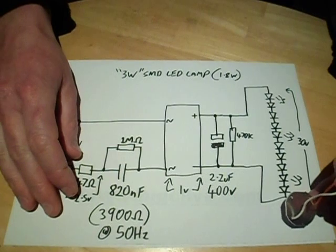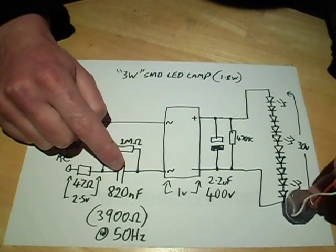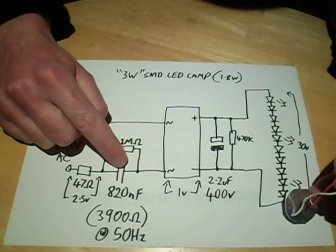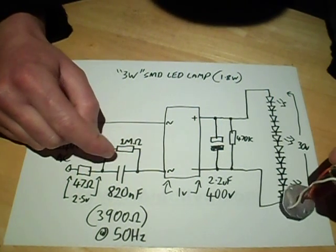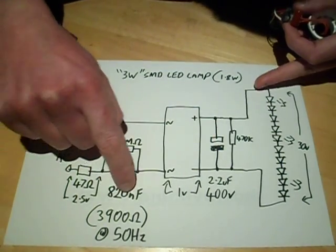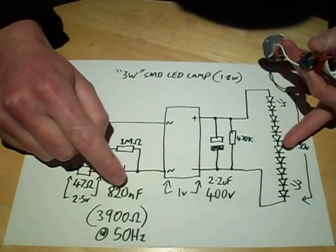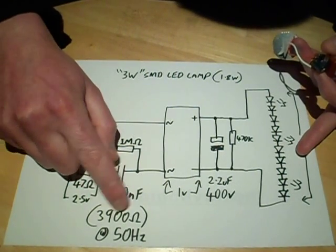I did the maths. The formula to calculate the equivalent resistance of a capacitor using the formula for capacitive reactance, which is X equals 1 over 2 pi fc. And that, for the 820 nanofarad capacitor at 50 Hz, gave an equivalent resistance for calculation purposes of 3900 ohms.